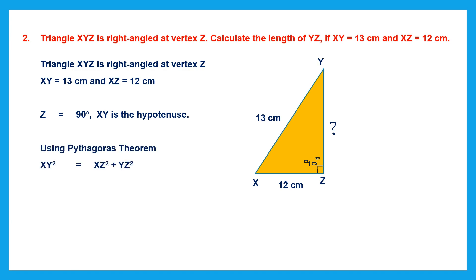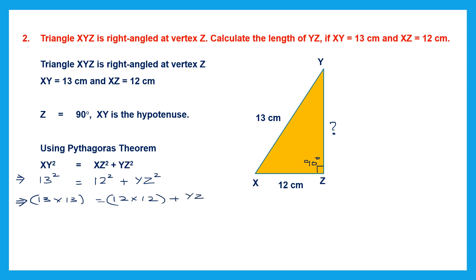Using the Pythagoras Theorem, XY² (the hypotenuse squared) equals the sum of the squares of the other two sides. So XY² = XZ² + YZ². XY is 13 and XZ is 12 centimeters. So 13² = 12² + YZ². That means 13 × 13 = 12 × 12 + YZ².